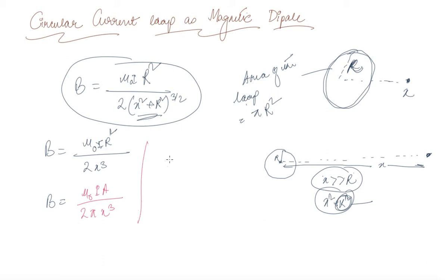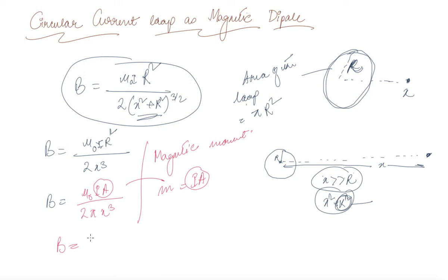The magnetic moment M is given by I times area, that is M = IA. Substituting this into our expression, the magnetic field becomes B = μ₀M / (2πX³), which can be rearranged as B = μ₀·2M / (4πX³).